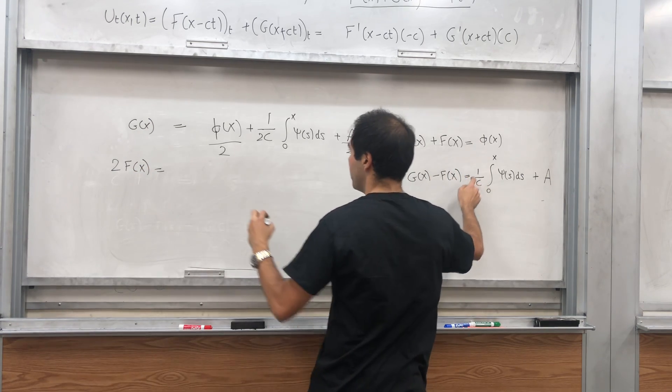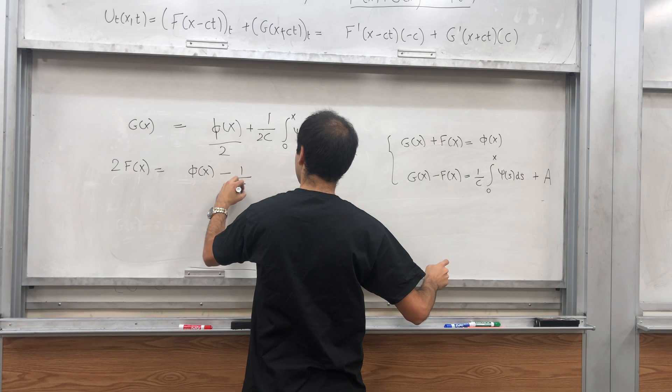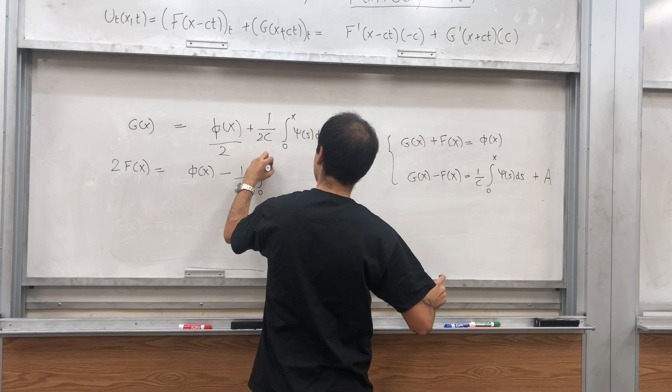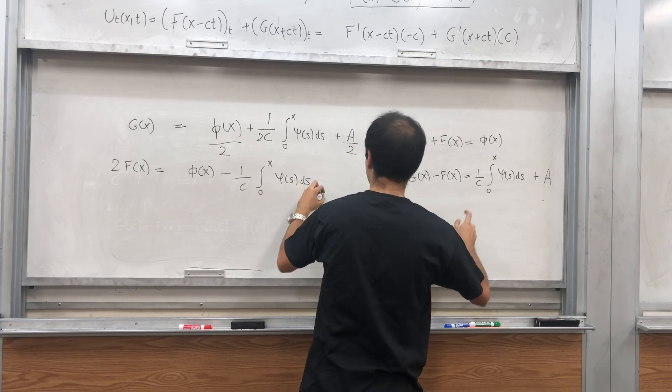Equals phi of x minus one over C integral from zero to x psi of s ds, and then minus A.